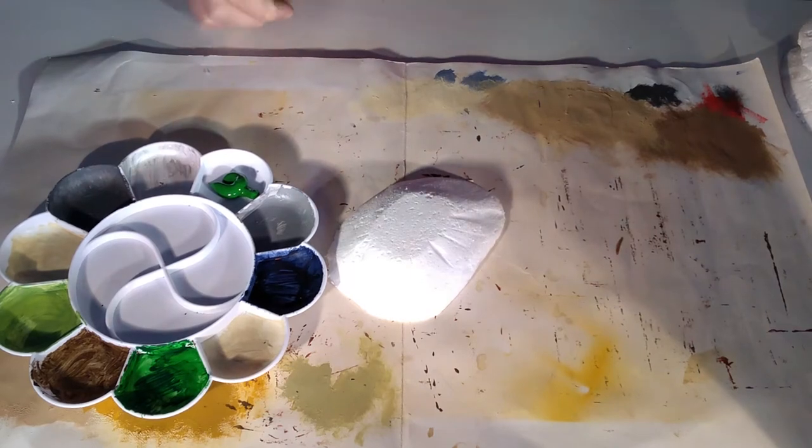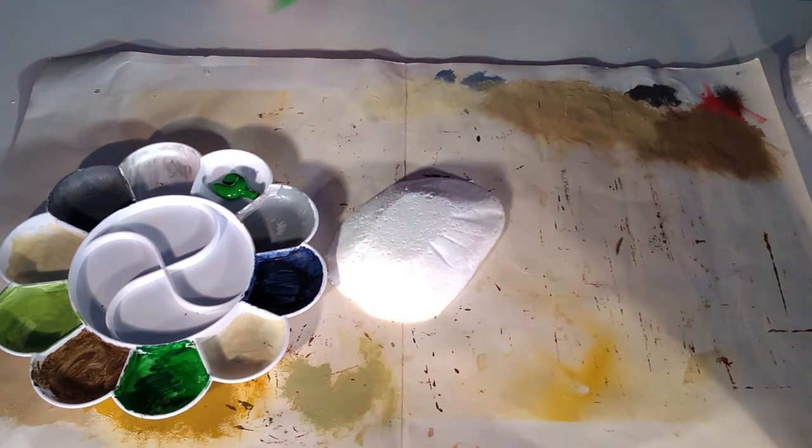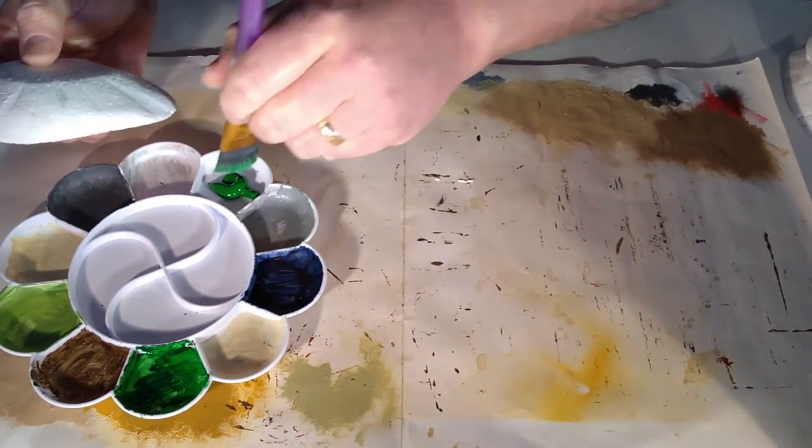It could be red for a Martian landscape or it could be yellow for a barren desert. Let's speed this up a bit so you don't have to see how badly I'm coloring my fingers in green paint.